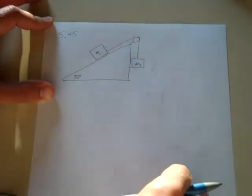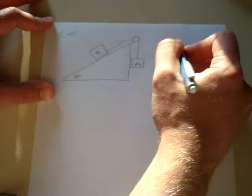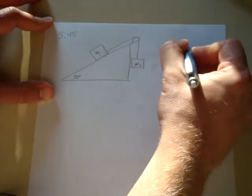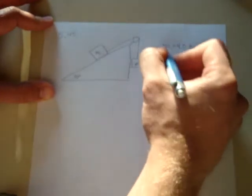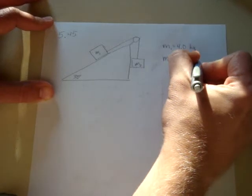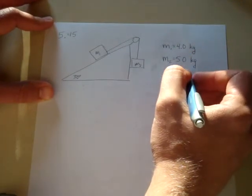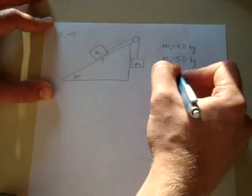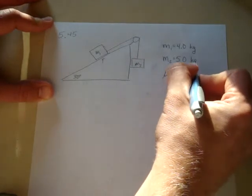There's a number of problems based on this picture, but the question I'm interested in, 5.45, states that M1 is equal to, I believe it means 4.0 kilograms. There's actually a typo on my book. I'm not sure if it's in yours as well. And mass 2 is equal to 5.0 kilograms.